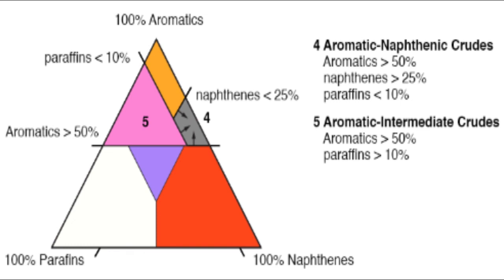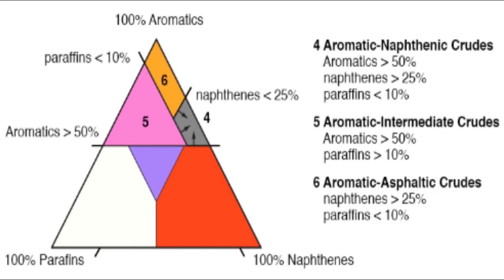This is the type 5 aromatic intermediate crudes. With these boundary lines, we can now identify the region for type 6 aromatic asphaltic crudes, seen as the orange region, which is bounded by naphthenes less than 25 percent and paraffins less than 10 percent.